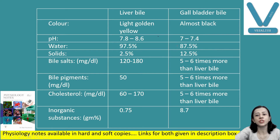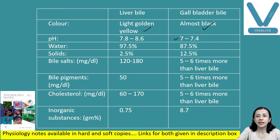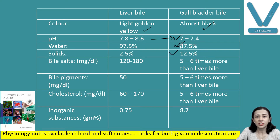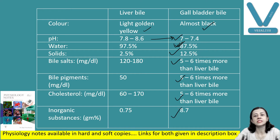This is the composition of liver bile versus gallbladder bile. The color of liver bile is light golden yellow; gallbladder bile is almost black. pH decreases in gallbladder bile. Water content decreases because it gets concentrated in the gallbladder. Solids are increased. Bile salts are increased 5 to 6 times more, bile pigments also increase 5 to 6 times, and cholesterol also increases 5 to 6 times. Inorganic substances are also increased. In short, all substances are increased in the bile and water content decreases.